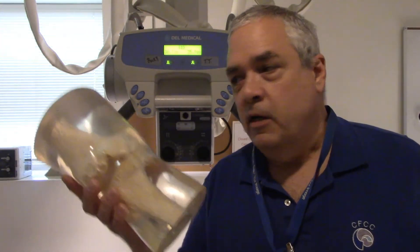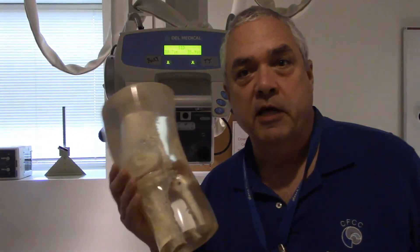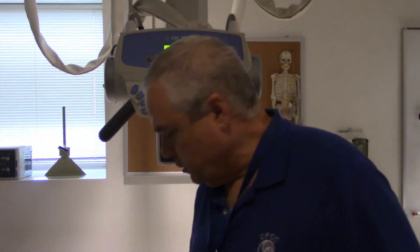We're going to take this phantom and we're going to put it on the table because we're going to be using the table bucky for this. Remember, this phantom is more than 10 centimeters in thickness, and anytime we have more than 10 centimeters, what do we need? A grid of some sort. Never shoot thick anatomy without a grid. Your images are going to look really bad. I'm going to put this on the table, we're going to make some exposures at 58 kVp and we're going to see what these images look like.